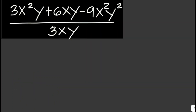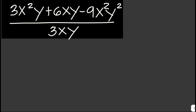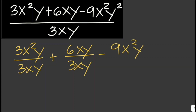For example, we're given this polynomial divided by this monomial. All we have to do is split this into separate division problems and then divide each term by the monomial. So we separate: 3x²y over 3xy, plus 6xy over 3xy, minus 9x²y² over 3xy.